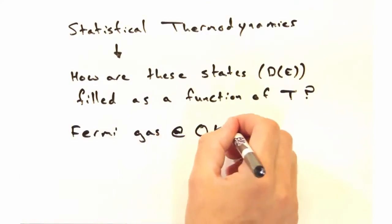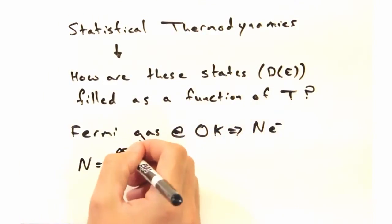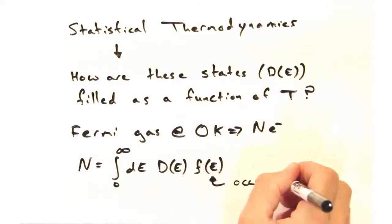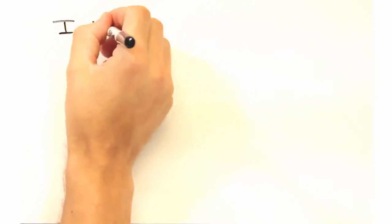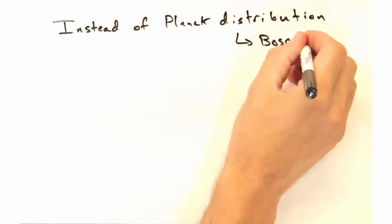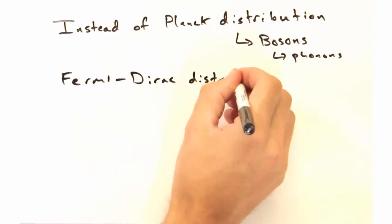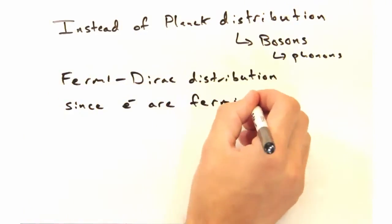To think about that, imagine we have a Fermi gas at zero Kelvin. Our system will have n electrons, and we can calculate that by integrating over the density of states times this occupation probability. This looks very similar to how we treated phonons. Yeah it is, but instead of the Planck distribution, we'll use the Fermi-Dirac distribution since electrons are fermions.